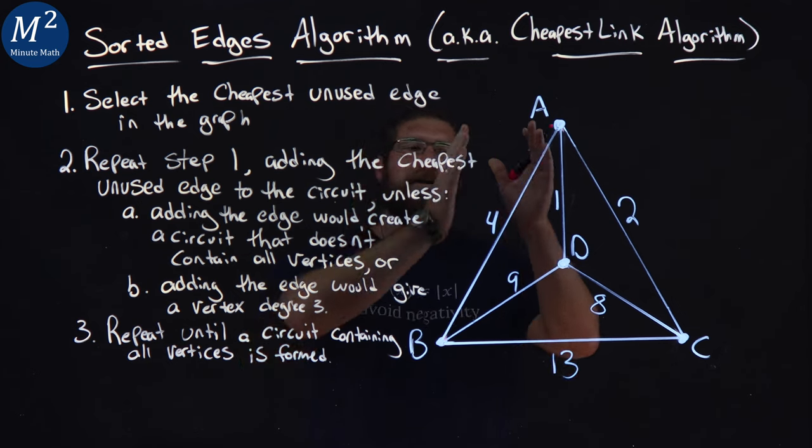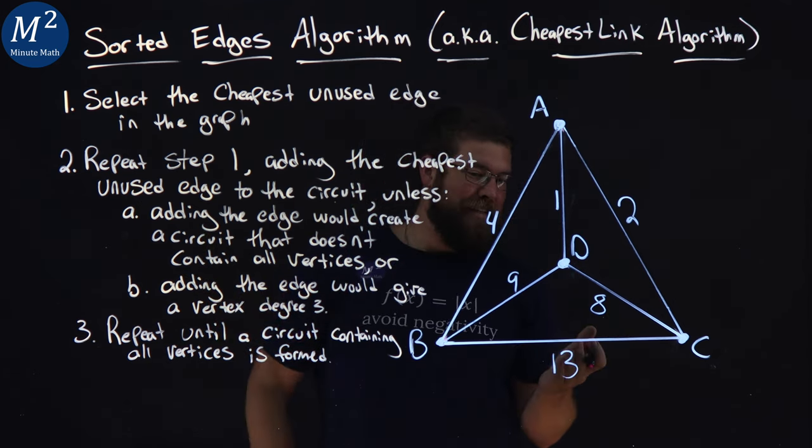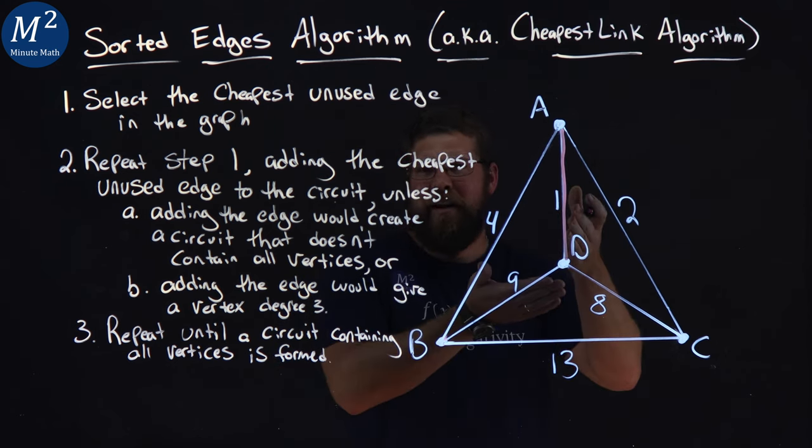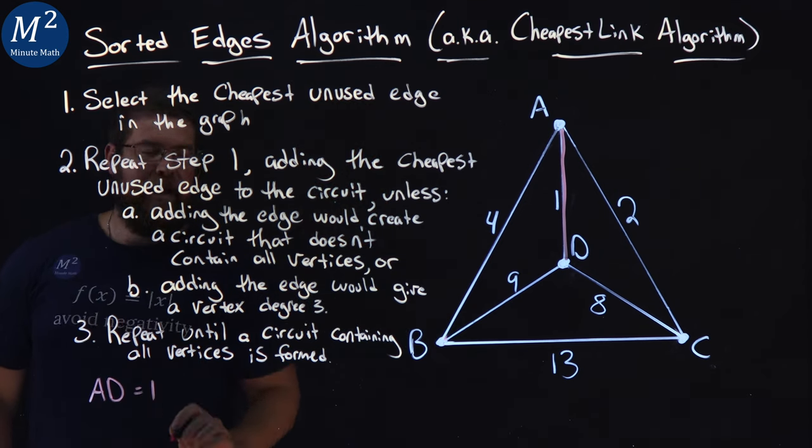First step. Find in our graph the cheapest unused edge. Well, the cheapest one here is AD. Has an edge weight of one. So I selected AD first, and that is equal to one.